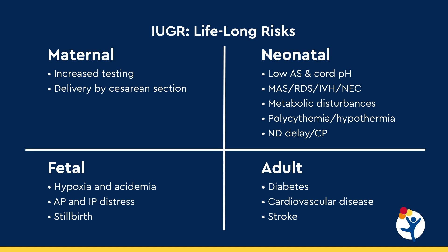Newborn risks include low APGAR scores and low blood pH, and a variety of complications including meconium aspiration syndrome, respiratory distress syndrome, metabolic disorders including low blood sugars, and long-term neurodevelopmental delay and cerebral palsy risks. It also places the adult that fetus is destined to become at risk for diabetes, coronary vascular disease, and stroke later in life.